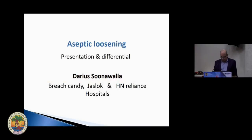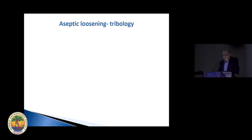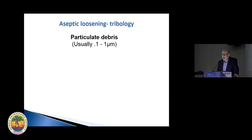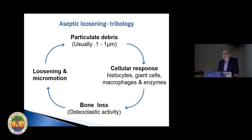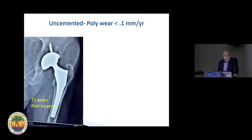Sorry to go back to basics for one slide, but basically we know the source of aseptic loosening is the particulate poly debris which produces a cellular response which causes osteoclasis and bone loss. That causes micro-motion, which eventually creates a self-propagating cycle. We know that when the poly debris linear wear is less than 0.1 millimeters per year, you don't have catastrophic osteolysis.